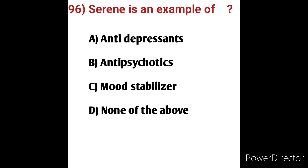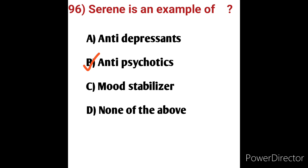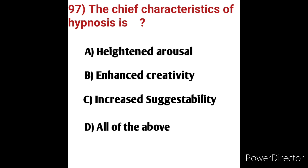Question 96: Serene is an example of which drug class? Options: A) antidepressant, B) antipsychotics, C) mood stabilizer, D) none of the above. Serene means calm and peaceful, not worried or excited — this describes antipsychotic behavior. Psychotic disturbances involve disturbed mind, mood, hyperactivity. Serene (calm and peaceful) is an example of an antipsychotic. Option B, antipsychotics, is the correct answer.